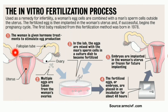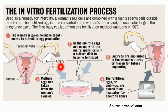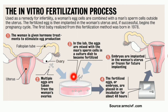The IVF steps in detail: first, the woman is given hormonal treatments to stimulate egg production; second, multiple eggs are taken from the woman's ovaries; third, in the lab, eggs are mixed with the man's sperm cells in a culture dish for fertilization; fourth, the fertilized eggs or embryos are placed in an incubator for about 48 hours; and finally, embryos are implanted in the woman's uterus or frozen for future implantation.